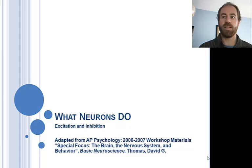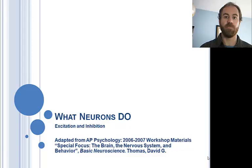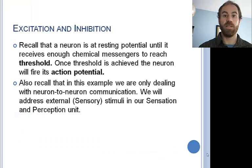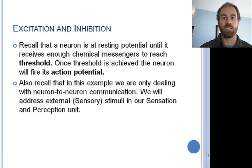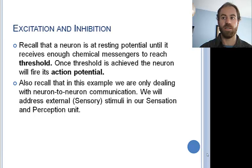Moving on to the excitation and inhibition process. In this presentation, I will discuss what happens in the dendrite and soma that leads to the firing of the neuron. Recall that a neuron is at resting potential until it receives enough chemical messengers to reach threshold. Once threshold is achieved, the neuron will fire its action potential. We're talking only about neuron-to-neuron communication here; we'll address external sensory stimuli in the next part of this unit, sensory sensation and perception.